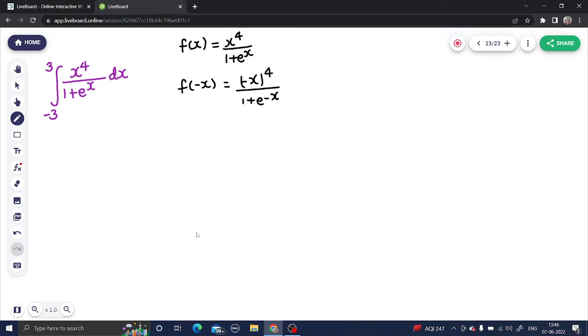Now, I cannot separate minus sign from here because if you want to write it something like this also, x power 4 divided by 1, this as 1 upon e power x. Then also if you take LCM, e power x will go up and in denominator you will get e power x plus 1. That way you are not able to solve.